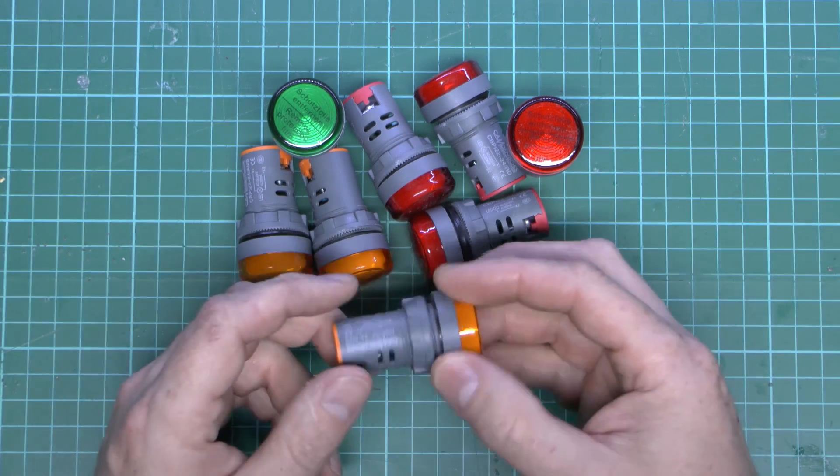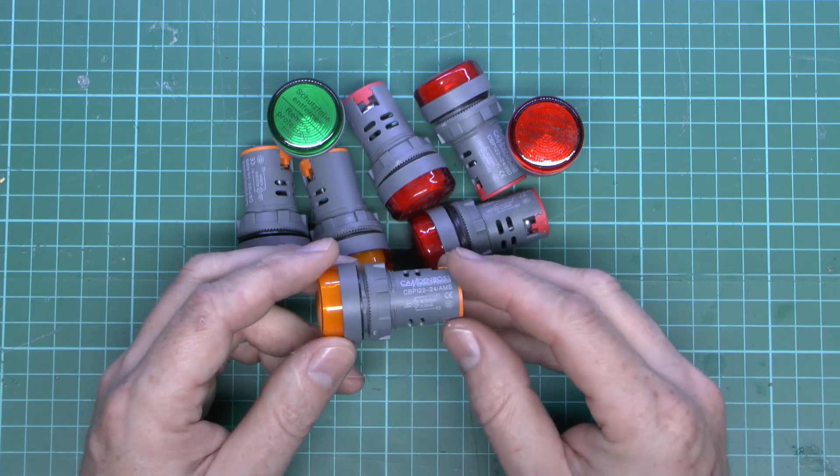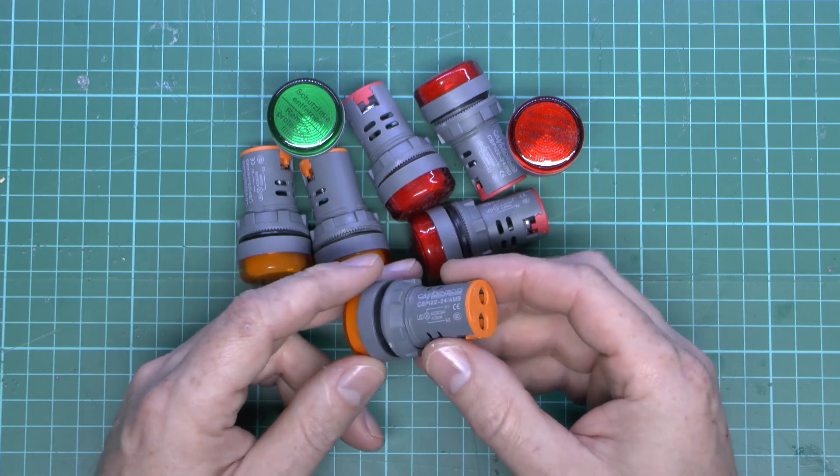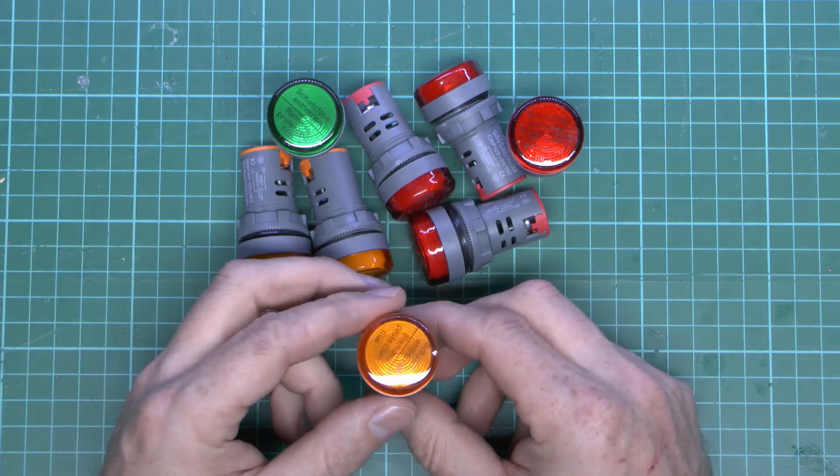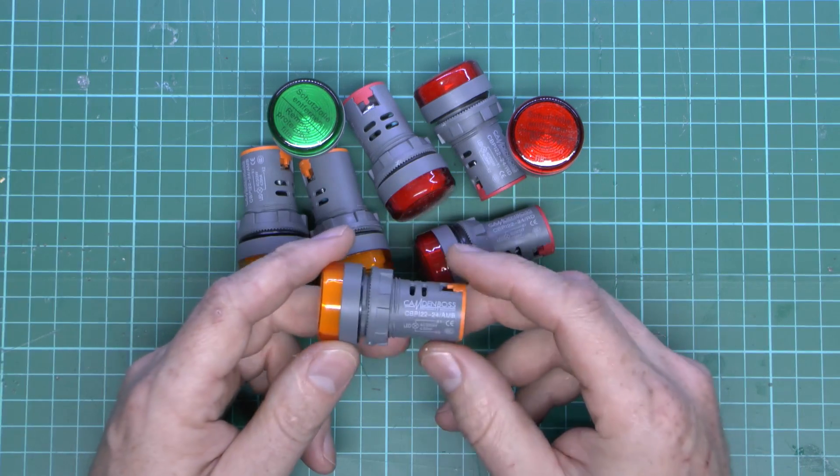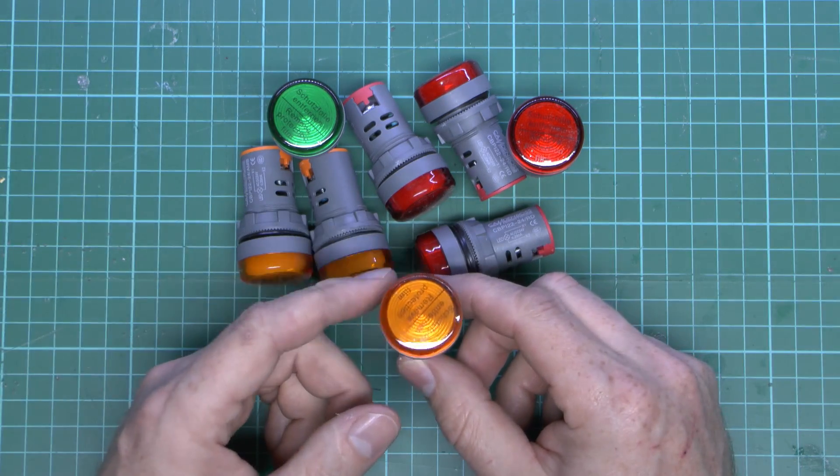Now these ones are LED, and these happen to be a 24V version, and they run on AC or DC. These are going to be running on AC, so again a fairly common voltage for control panels and various types of equipment. And you can get these in other voltages including 12 and 230 as well.